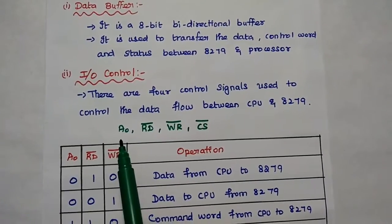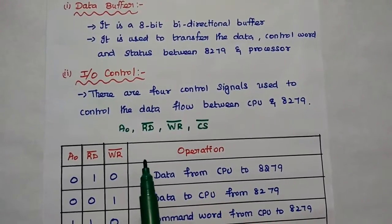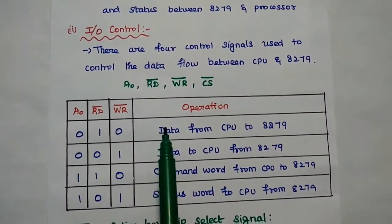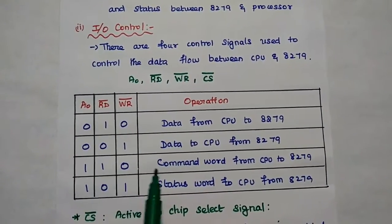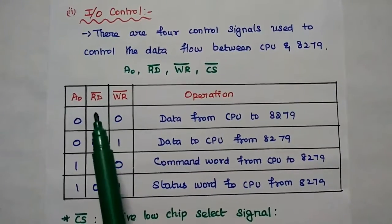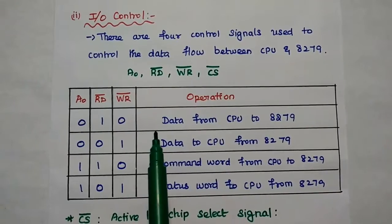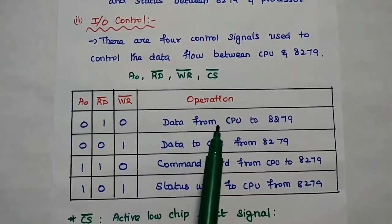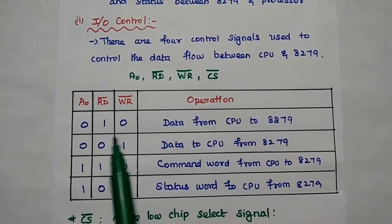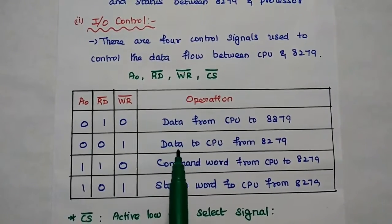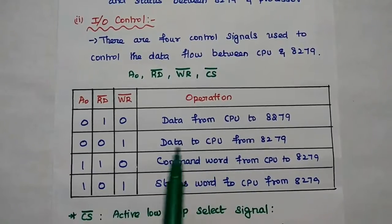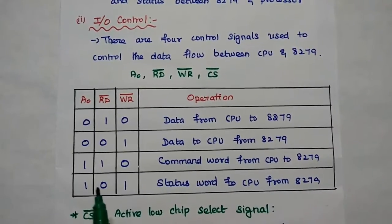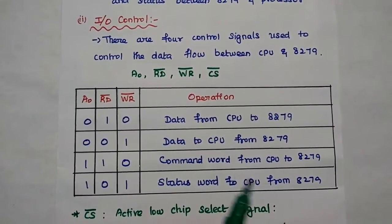The A0 address line is used to represent what type of information is to be transferred. If A0 equals 0, it denotes data; if A0 equals 1, it defines the command word or status word. These 3 bits are used to select the operation: CS=0, WR=1, A0=0 selects data from CPU to 8279; CS=0, WR=0, A0=1 selects data to CPU from 8279; CS=1, WR=1, A0=0 means command word from CPU to 8279; CS=1, WR=0, A0=1 means status word to CPU from 8279.